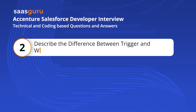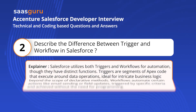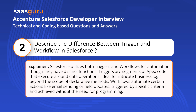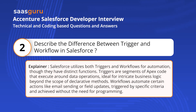Question 2: Describe the difference between a trigger and a workflow in Salesforce. Salesforce utilizes both triggers and workflows for automation, though they have distinct functions. Triggers are segments of Apex code that execute around data operations, ideal for intricate business logic beyond the scope of declarative methods. Workflows automate certain actions like email sending or field updates, triggered by specific criteria and achieved without the need for programming.